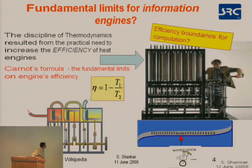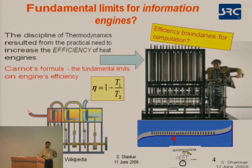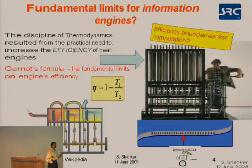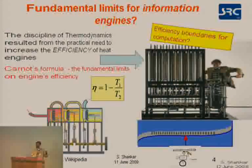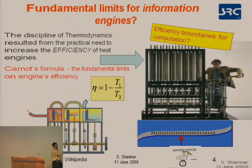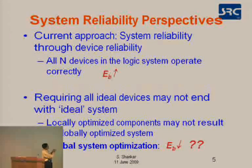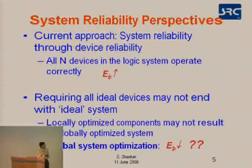The fundamental limits of information engines: the discipline of thermodynamics set off the entire heat engine and the industrial revolution. In 1824, Sadi Carnot formulated the principles of the engine. Carnot was not a physicist — he was an engineer — and he tried to see why different engines were not able to increase efficiency. He put it in his treatise, and that was the first basis of the second law of thermodynamics. Can we try to extend such a concept to computing? That is the question we are asking. From a system reliability perspective, the current approach is that system reliability is done through device reliability: all end devices in logic systems need to operate correctly.